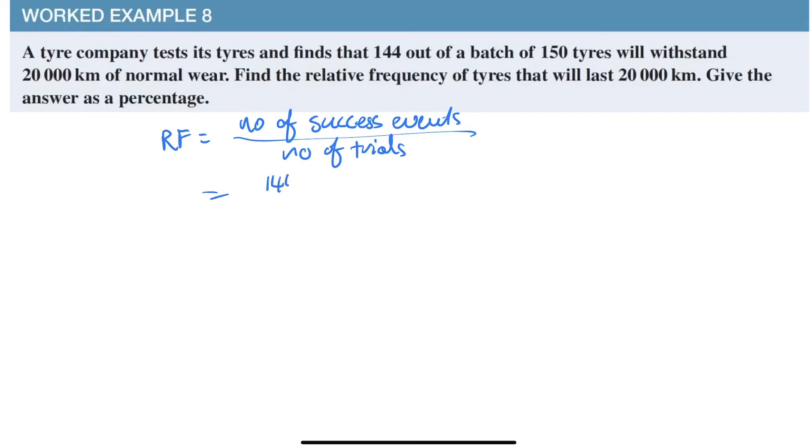144 happened in my trial out of 150 trials and that will give me an answer of 0.96. They say give it as a percentage. So decimal means times a hundred and that is 96 percent.